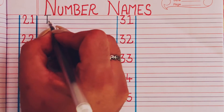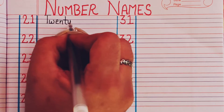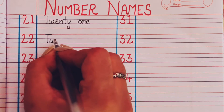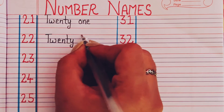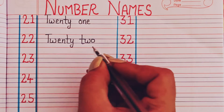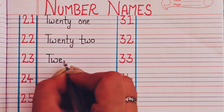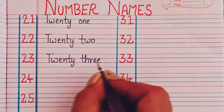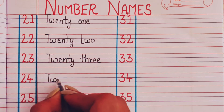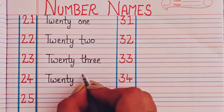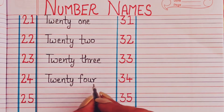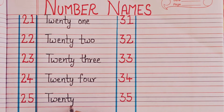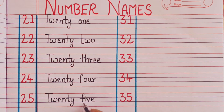21 - T-W-E-N-T-Y O-N-E, 22 - T-W-E-N-T-Y T-W-O, 23 - T-W-E-N-T-Y T-H-R-E-E, 24 - T-W-E-N-T-Y F-O-U-R, 25 - T-W-E-N-T-Y F-I-V-E.